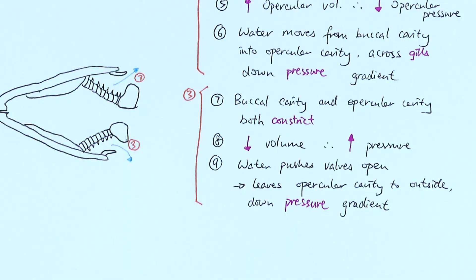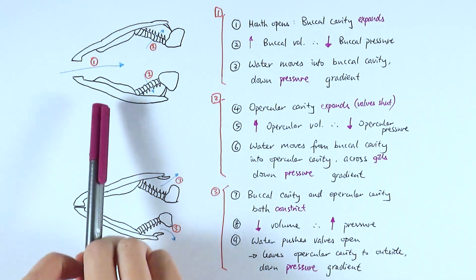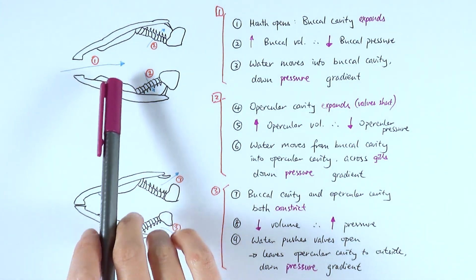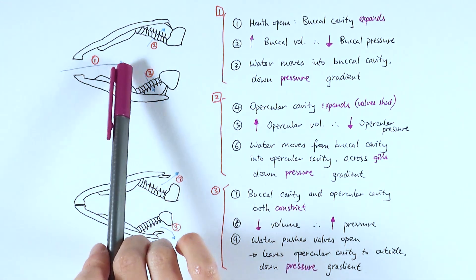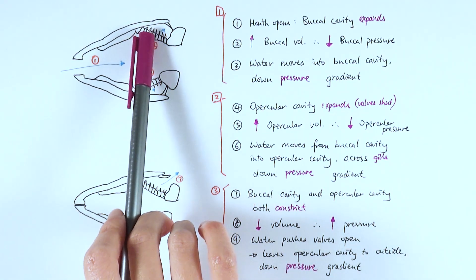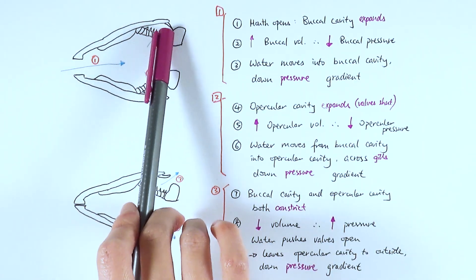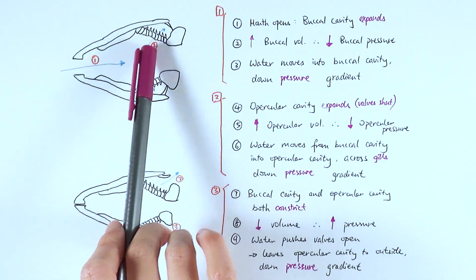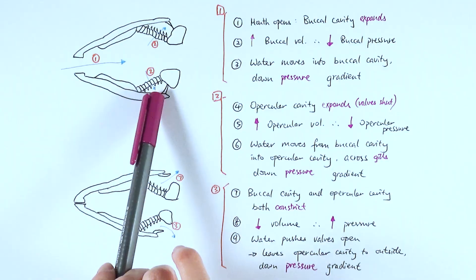"Down the pressure gradient" is a really good phrase to use in exams. To summarize: first, the mouth opens and the buccal cavity expands by lowering its floor, increasing volume and decreasing pressure, so water moves in down the pressure gradient. Then the opercular cavity also expands with the valve shut, increasing volume and decreasing pressure to a level even lower than the buccal cavity pressure, so water moves from the buccal cavity into the opercular cavity across the gills.